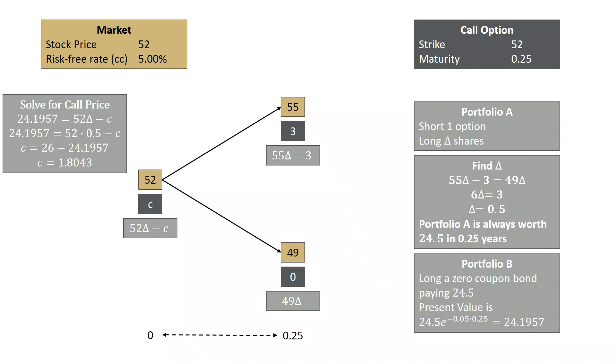We then could solve for the call price by observing that these two portfolios are worth exactly the same at all times in the future, and thus they must be worth exactly the same today. So 24.1957 equals 52 delta minus C. We rearrange and find that C equals 1.8043.